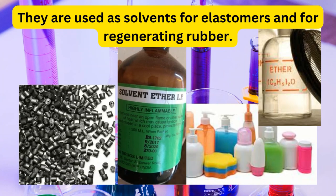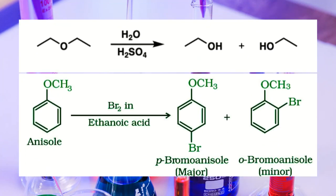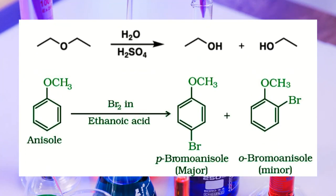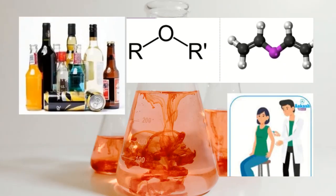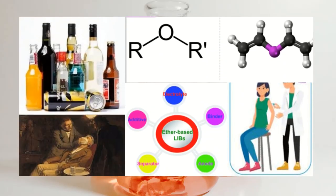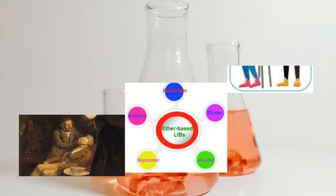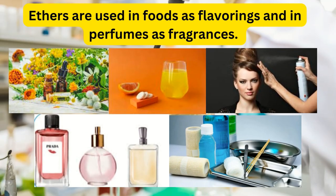Ether has several important properties that make it useful in organic chemistry. It has a relatively low boiling point and is often used as a solvent in reactions. It can also undergo substitution reactions with water and alcohols. Some of the common uses of ether include as an anesthetic, solvent, fuel additive, and as a starting material in the synthesis of organic compounds.